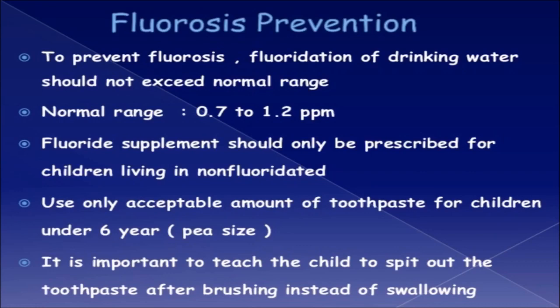Fluorosis Prevention: To prevent fluorosis, fluoridation of drinking water should not exceed the normal range of 0.7 to 1.2 ppm. Fluoride supplements should only be prescribed for children living in non-fluoridated areas. Use only an acceptable amount of toothpaste (pea size) for children under 6 years, and teach the child to spit out toothpaste after brushing instead of swallowing.